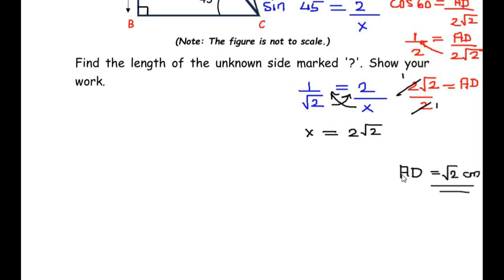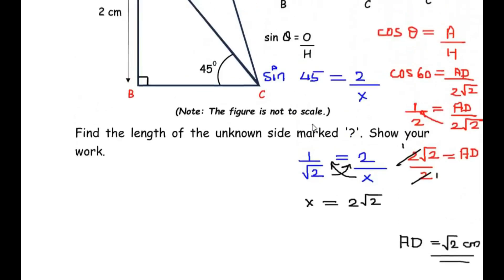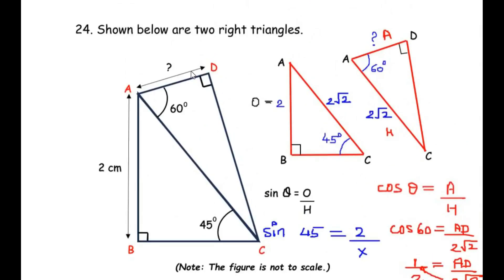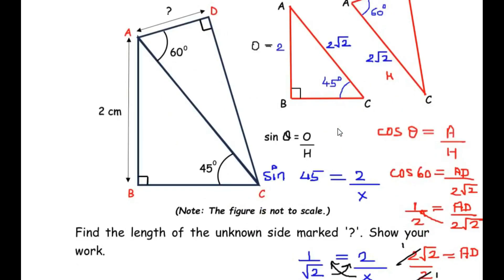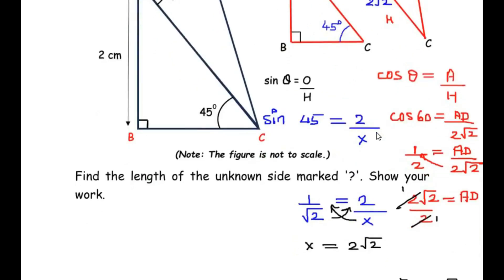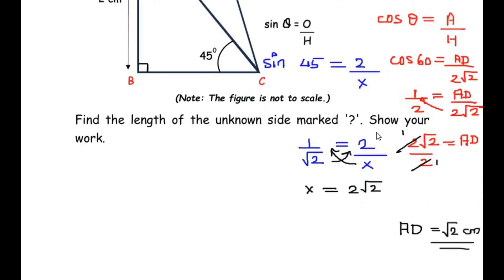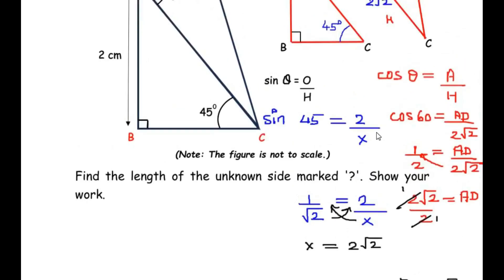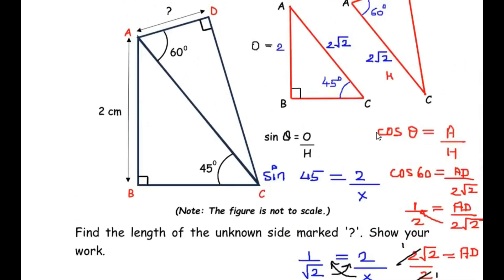So the length of the missing side AD is √2 centimeters. We used the trigonometric ratios sine and cosine to find the value of AD. I hope you understood all the steps. If you liked the video, please like, share, and subscribe to my channel. Thank you for watching.